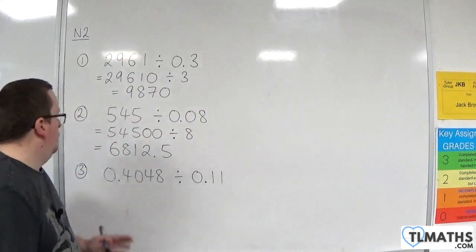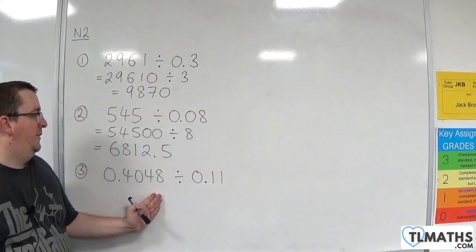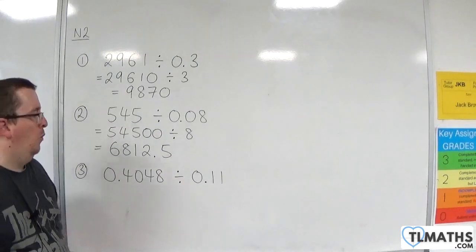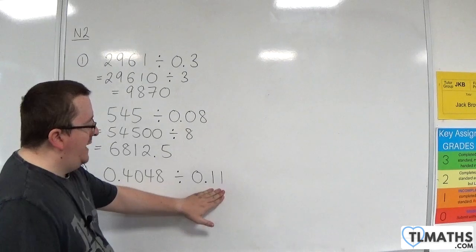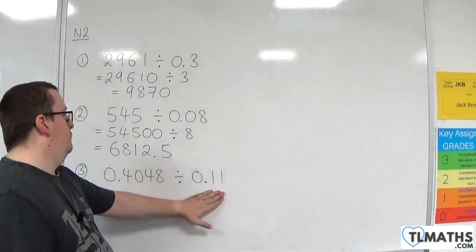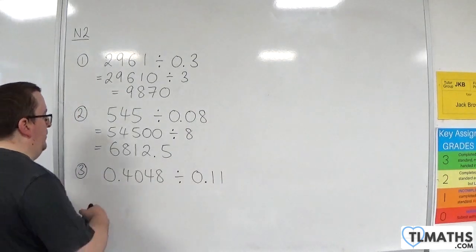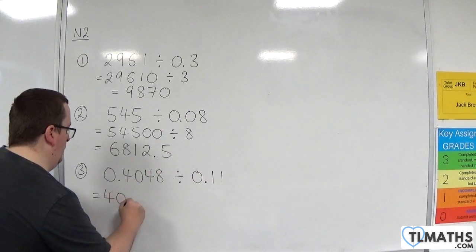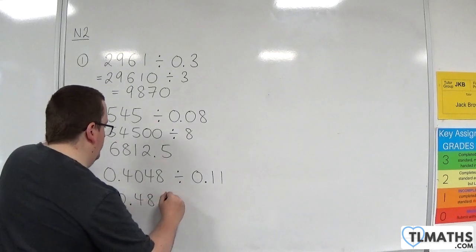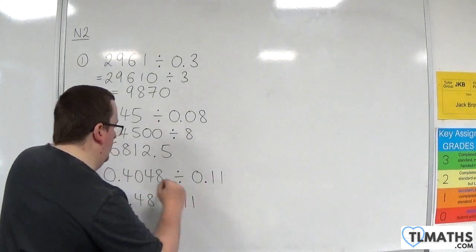And the last one: 0.4048 divided by 0.11. Look at what we're dividing by. To get rid of the decimal, I'm going to need to multiply through by 100. So I'm going to multiply both by 100, and we'll have 40.48 divided by 11.